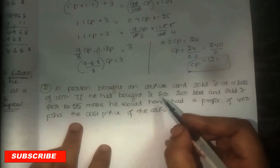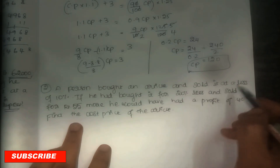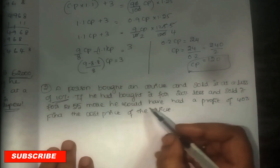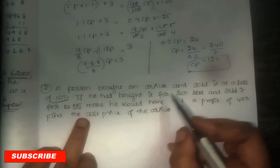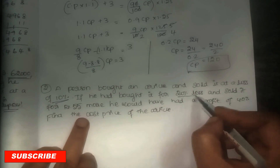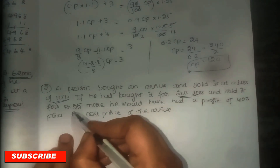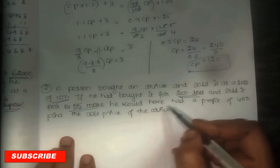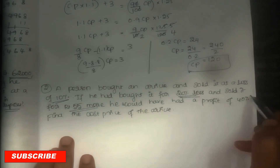A person bought an article and sold it at a loss of 10%. If he had bought it for 20% less and sold it for Rs. 25 more, he would have had a profit of 40%.